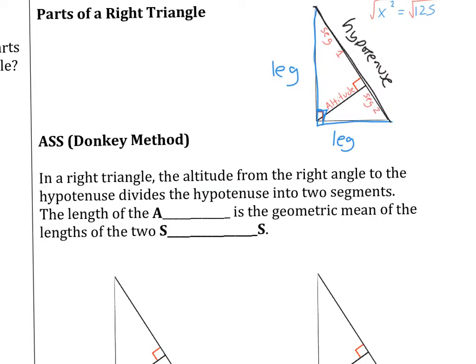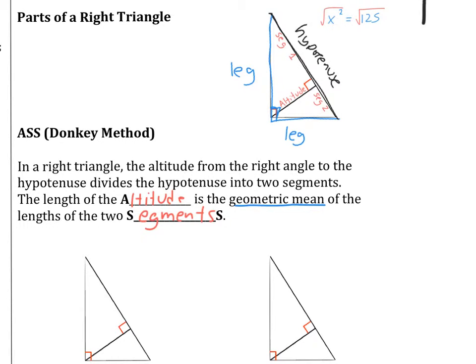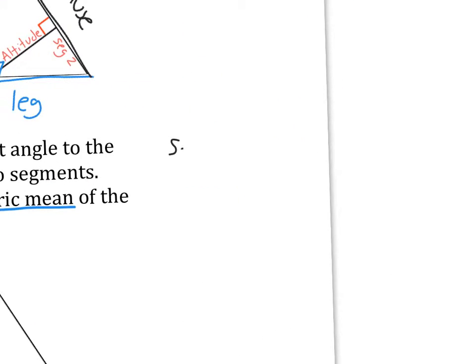So I'll read it and then you will read it to your partner because it sounds a little bit confusing. In a right triangle, the altitude from the right angle to the hypotenuse divides the hypotenuse into two segments. The length of the altitude is the geometric mean of the lengths of the two segments. So notice I have the two S's there, but that's because segment one and segment two. So if I were to set this up as an equation, it would look like this, that one segment, and it actually doesn't matter which one, so I'll just call it segment one compared to the altitude is like the altitude compared to the other segment, segment two.